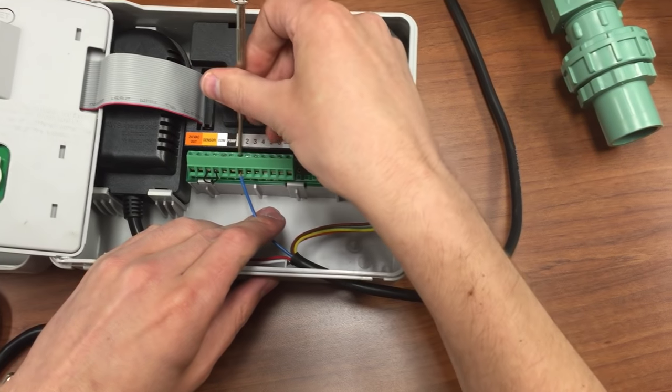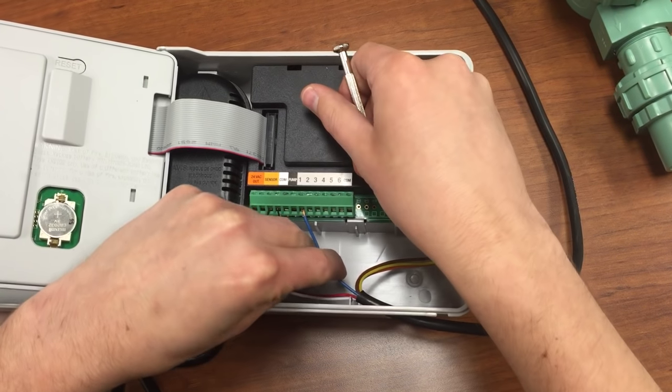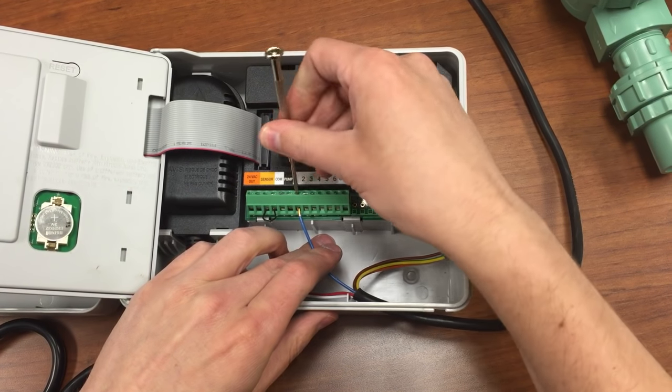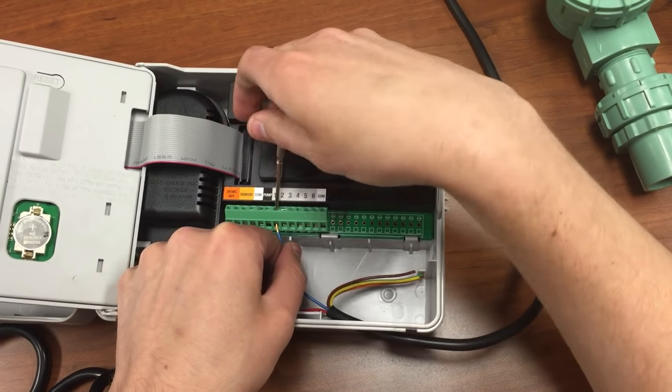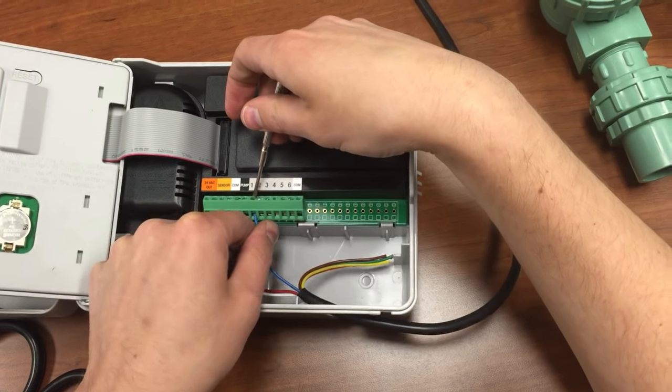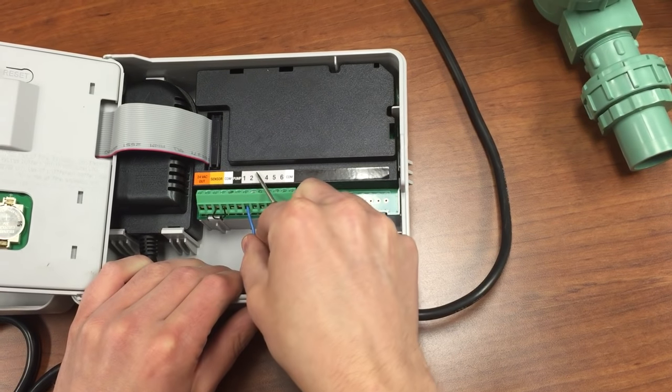Some of our timers have push-button connections where you just push it down, push down the terminal, stick the wire in and let it go and it will grab. But either way, this tightens it down, get that in there. You want to make sure it's inserted well so that when you tighten this, it makes a good, strong connection.